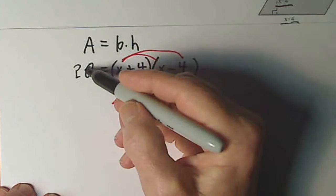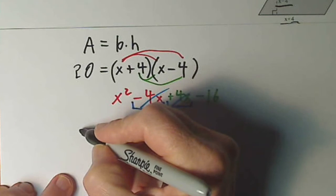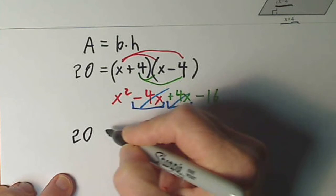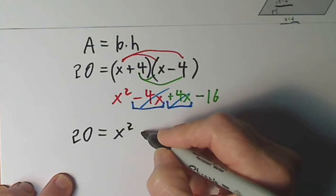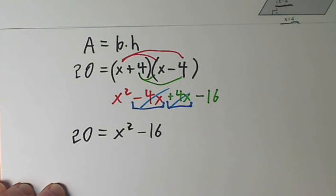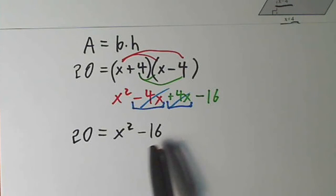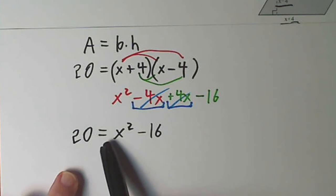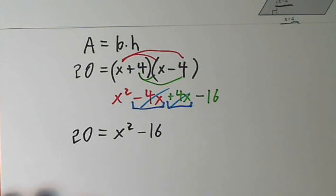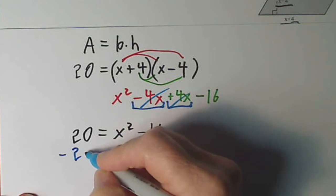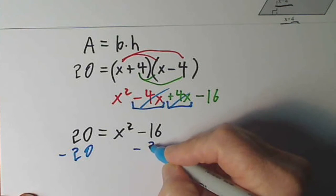Alright. So bringing down what remains. My 20 waiting patiently to be used over there. x squared. And let's bring down negative 16. Okay. Again, I want something times something equals 0. So I don't want that 20 there. I'm going to get rid of it. I'm going to subtract 20. Subtract 20.